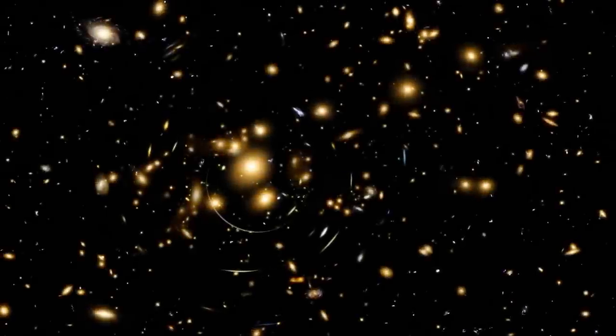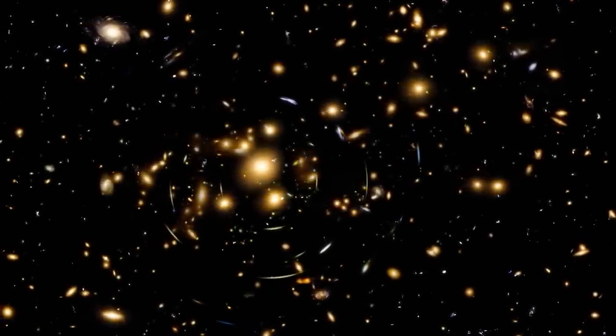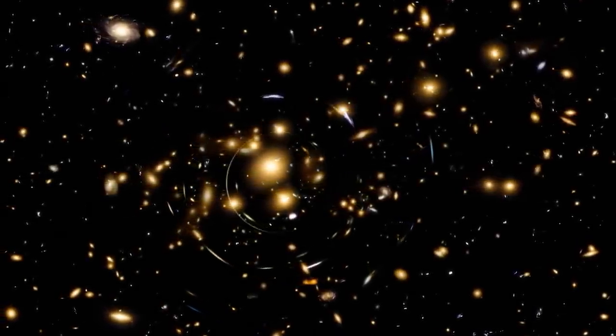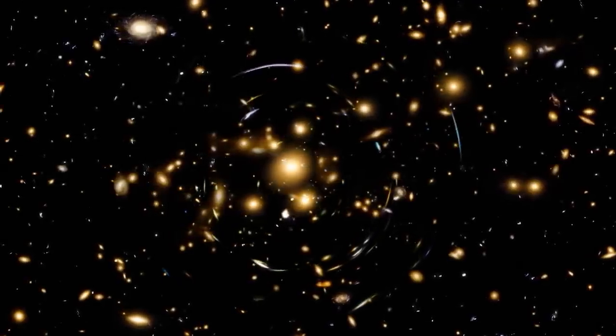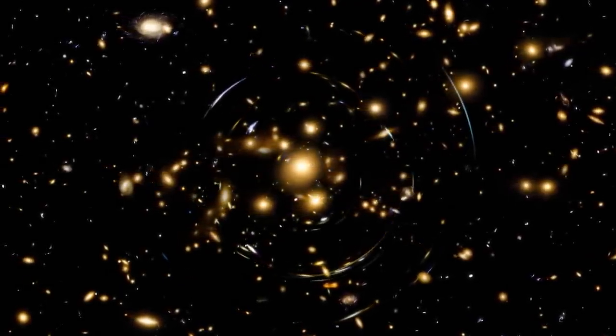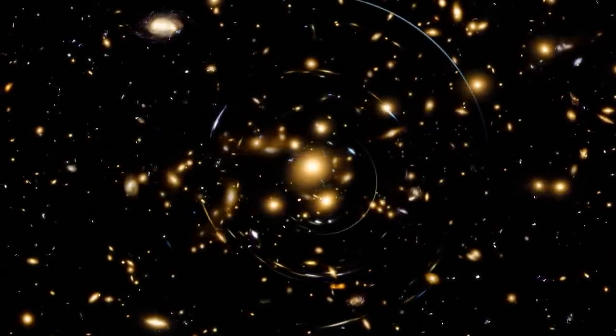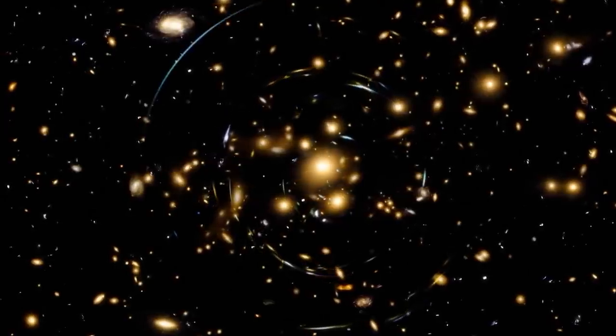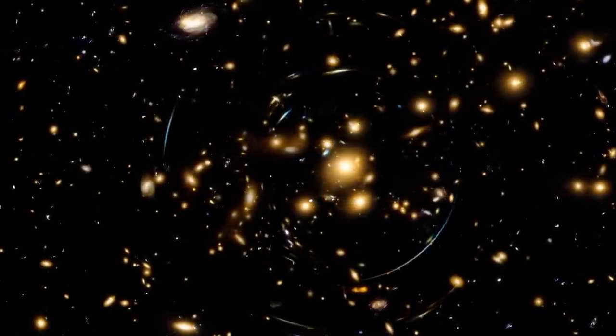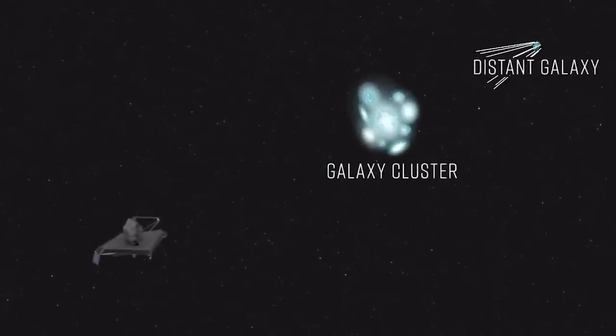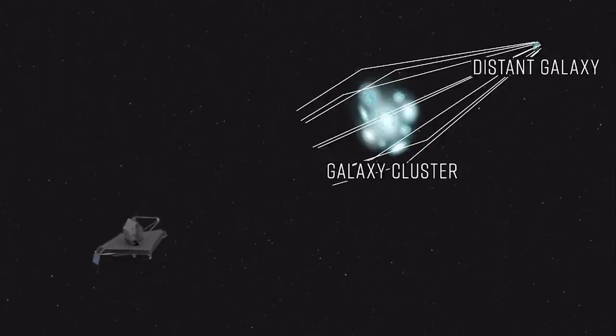One of its most remarkable observations of Pandora's cluster is the identification of hundreds of lensed galaxies. These are galaxies that lie far beyond Abell 2744. Their light, while journeying across the cosmos, gets bent, magnified, and distorted due to the colossal gravitational influence of the cluster. This phenomenon allows the James Webb Telescope to glimpse galaxies that otherwise might remain hidden from view, shining a light on cosmic entities from eons past.